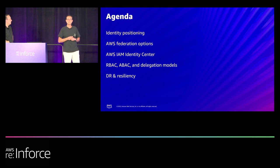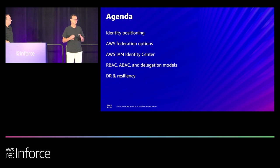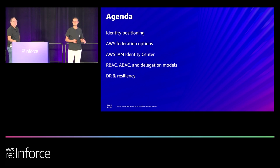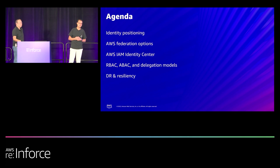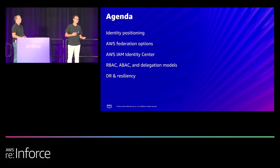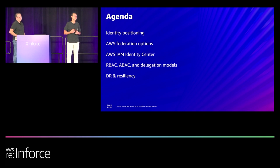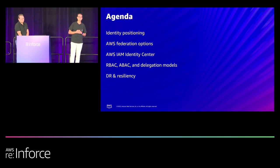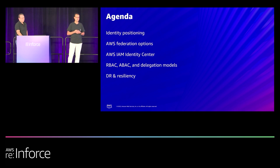In terms of agenda, we're going to first start by setting the stage of which identity topic we're going to talk about. Identity is a broad topic, so what kind of identity type is this session going to be about. After that, we're going to see different options for you to bring your enterprise identity into AWS. And as you scale, what are the different access and delegation models available for you, and we will conclude by planning your disaster recovery and resiliency for your identity solution.